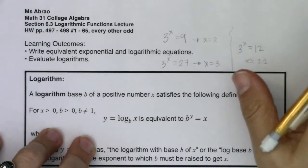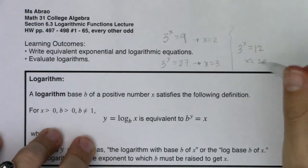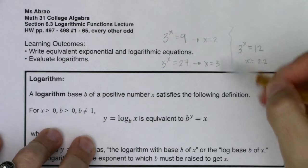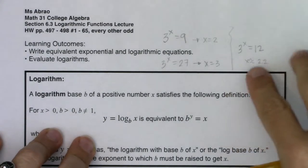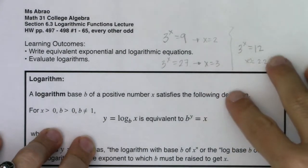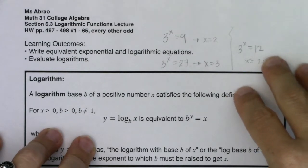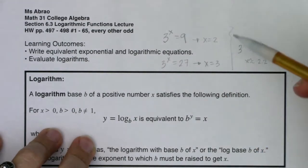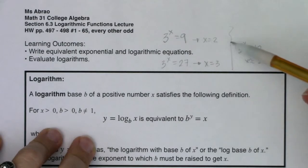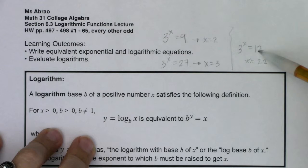Now again, this is just a guess. I know it's between 2 and 3, but I don't know where it falls between 2 and 3. And so this was the motivation behind coming up with logarithms. Mathematicians were asking themselves, what do we do when we have two powers on either side and they're not the same base? And the answer to that was something called a logarithm.